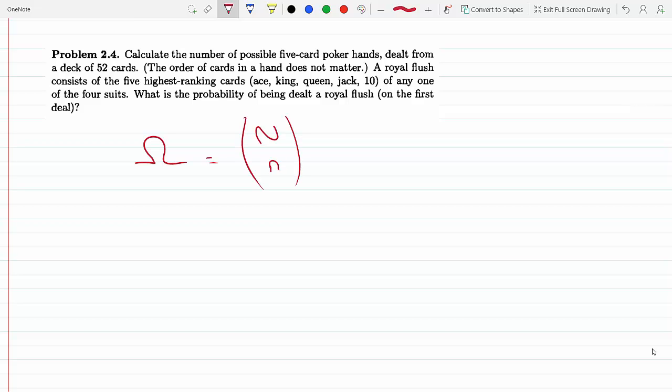As long as the order doesn't matter, here I have big N is 52 cards and small n I'm choosing five possible five-card poker hands, so n is 5. This would be 52 choose 5.